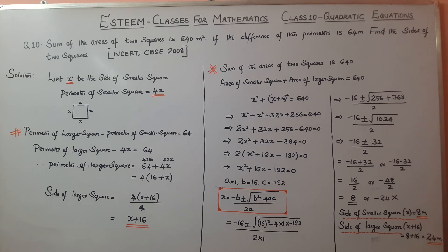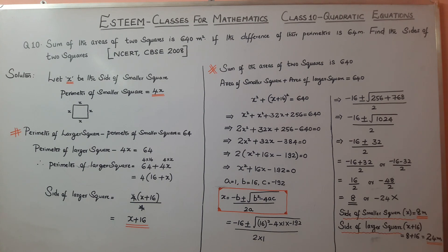Taking the positive value, x equals 8. So the side of the smaller square is 8 meters. The side of the larger square is x plus 16, which equals 8 plus 16 equals 24 meters. The sides of the two squares are: smaller square equals 8 meters, larger square equals 24 meters.